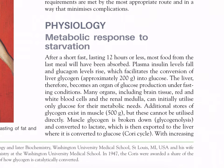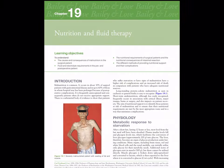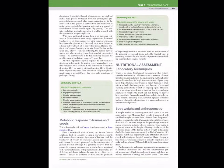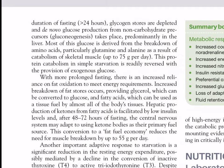Under fasting conditions, many organs including brain tissue, red and white blood cells, and renal medulla can initially utilize only glucose for their metabolic needs. Additional stores of glycogen exist in muscle (500 grams), but these cannot be utilized directly. Muscle glycogen is broken down via glycogenolysis and converted to lactate, which is then exported to the liver where it is converted to glucose via the Cori cycle.